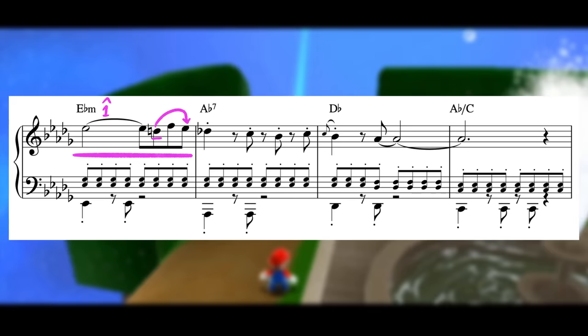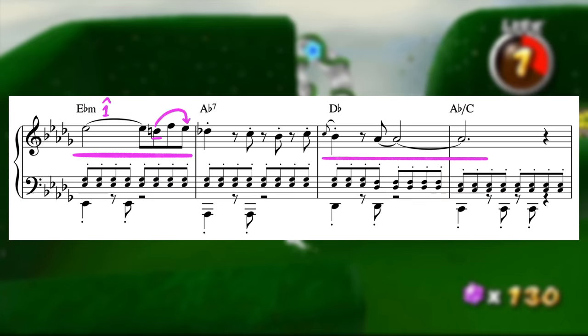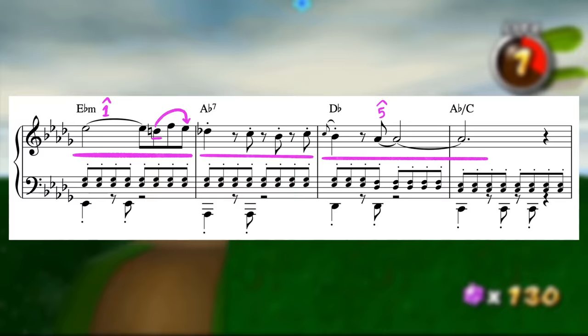Bars 3 and 4 of the phrase are also kept the same other than a shift up of a whole step, the appoggiatura figure resolving this time to the fifth of our tonic Db chord. Once again, the second bar of the phrase introduces the most variation, with a totally new contour and syncopated rhythm.